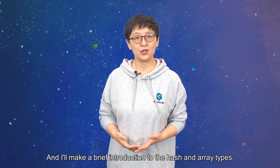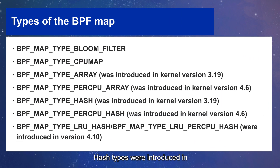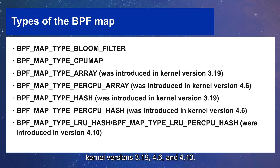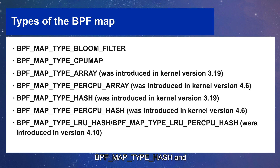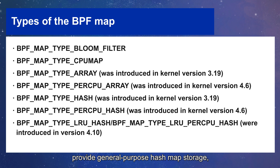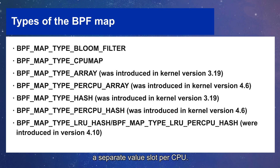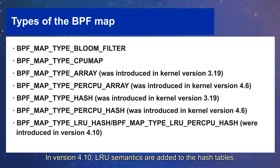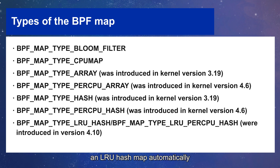This slide shows several storage types available, and I will make a brief introduction to the hash and array types. Hash types were introduced in kernel versions 3.19, 4.6, and 4.10. In versions 3.19 and 4.6, BPF map type hash and BPF map type per CPU hash provide general-purpose hash map storage, where both the key and value can be structs. The per CPU hash provides a separate value slot per CPU, and the per CPU values are stored internally in an array. In version 4.10, LRU semantics are added to the hash tables. When the hash table reaches its capacity, an LRU hash map automatically removes the entries rarely used.